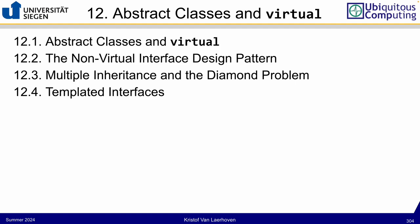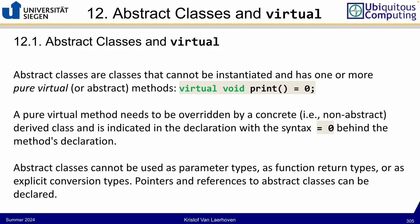We move on to abstract classes and revisit the virtual keyword. Abstract classes, which many of you may know already from Java or Python, are classes that cannot be instantiated — you can never create an object of an abstract class. That is, by definition, what an abstract class should be.